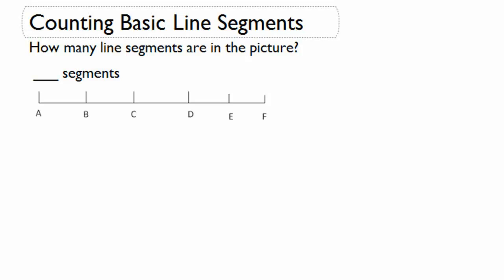Now let's talk about how to count basic line segments. How many line segments are there in the picture? First, let's count how many line segments there are that are just one unit long. We have one, two, three, four, five. So we have five that are one unit.